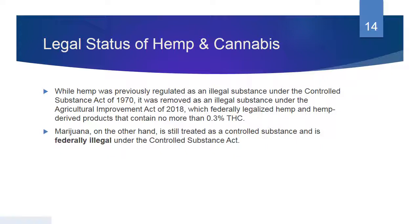Hemp was removed as an illegal substance under the Agricultural Improvement Act of 2018, or the Farm Bill, which federally legalized hemp and hemp-derived products. For marijuana, it's still treated as a controlled substance. A friend of mine with multiple sclerosis — his mom used to go after medical cannabis off the streets to help him with his muscle spasms. Obviously the times have changed, and it's a much better system now, but people have known about this for a long time.